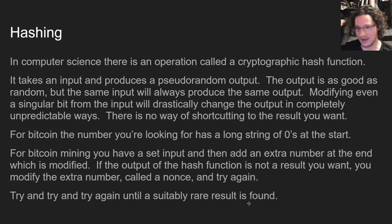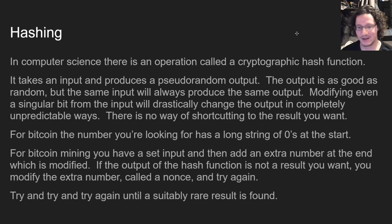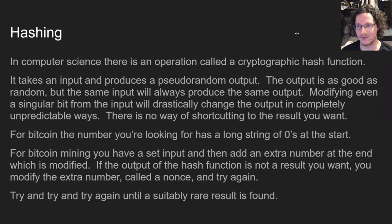That dice roll function is called a cryptographic hash function. It takes an input and produces a pseudo-random output — the output is as good as random, but the same input will always produce the same output. So if we're both given the same input and we both know what the hash function is, we should both arrive at the exact same output. These are supposed to be incredibly chaotic functions such that even modifying a single bit will completely change the output in absolutely unpredictable ways. If anything changes, you have to redo the entire computation — there are no shortcuts, no way of arriving at a solution you want without doing it over and over again with different inputs.